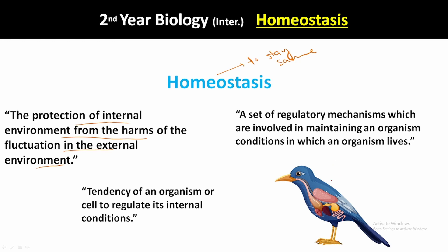There are two environments an organism faces: an external environment and an internal environment. The organism lives in the external environment, but its tissues and organs live in the internal environment. For example, for humans the internal temperature set point is 37 degrees Celsius, but there can be a significant difference in the external environment — it could be less or higher than 37 degrees Celsius.